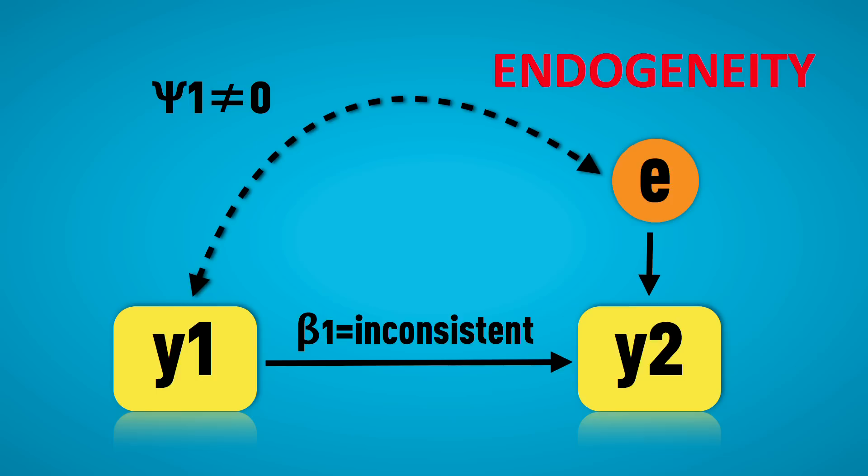So let me show you how to estimate this correctly, but first we will start off how to estimate it incorrectly. Now usually what is done in these cases is that Y1 is used as a predictor of Y2. The problem is that Y1 actually correlates with the disturbance in Y2. In other words, this correlation is not zero. Beta1, the relationship between Y1 and Y2, will in fact be inconsistent in its estimation. It won't be correct.